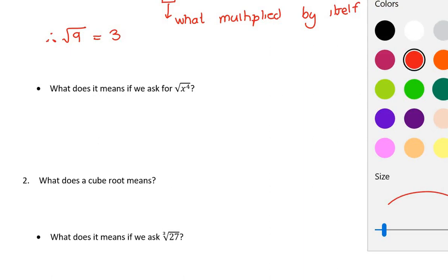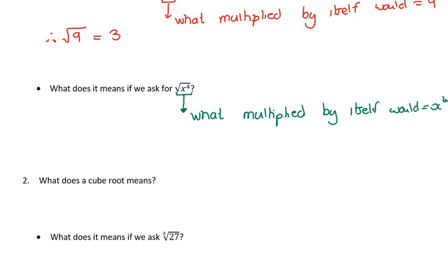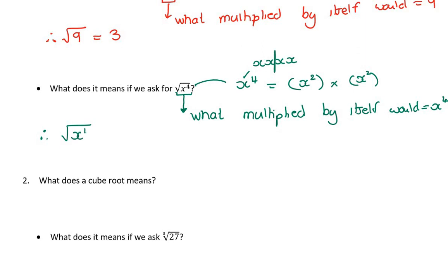Now, can we extend that to algebra? Of course we can, especially now that we've done exponents, because it's exactly the same logic. If I ask you what is the square root of x to the power of 4, the question is: what multiplied by itself would equal x to the power of 4? You can think of x⁴ as having four x's, and you need to divide them into two identical parts — two x's in each group. So the square root of x⁴ is x squared.